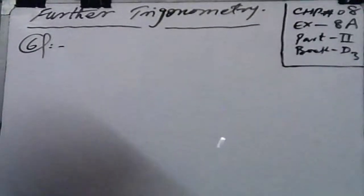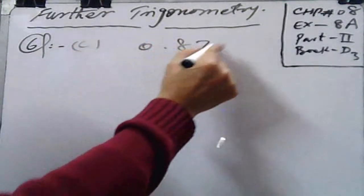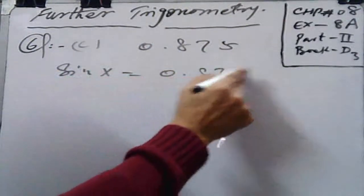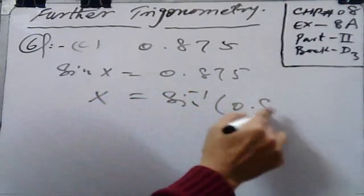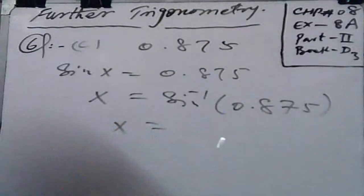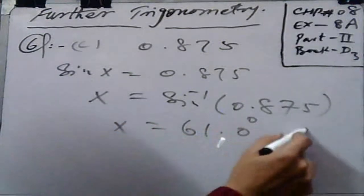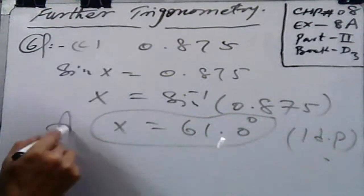In part c, we have 0.875. So sin x is equal to 0.875. The value of x is sin inverse 0.875. With the help of a scientific calculator you will get 61.0 degrees, up to 1 decimal place. 61 is again less than 90, so it is an acute angle. Here is your result.